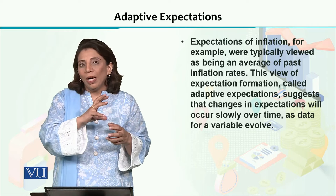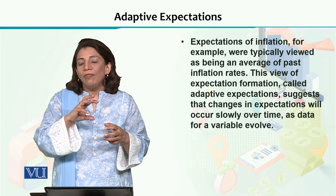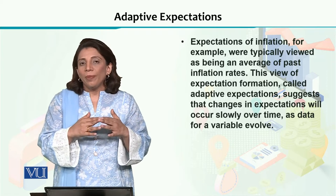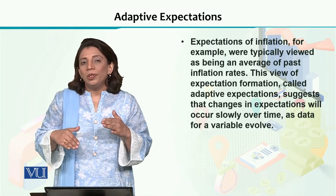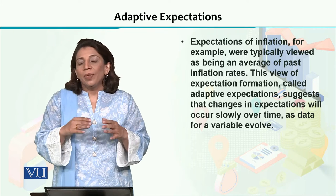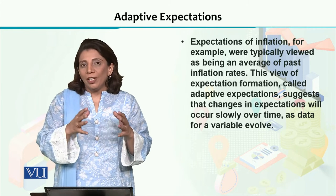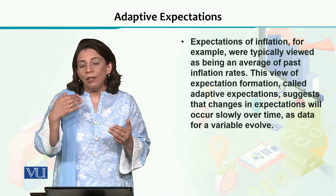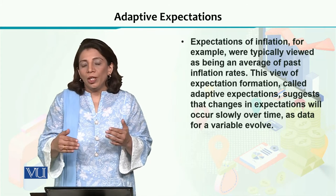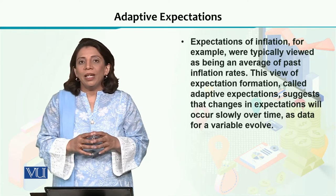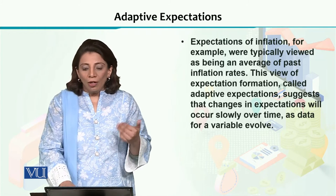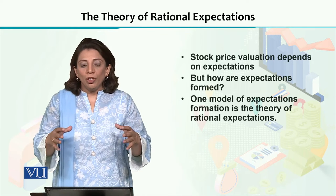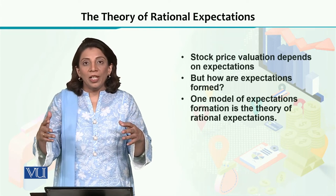If the prices have gone up in the past, they will be expected to rise in the future also. Conversely, if we have seen a downward movement in the previous data, the expectations for the future for that particular stock will be formed in a way that we will expect a downward movement again in future. This phenomenon is termed as adaptive expectations. On the contrary, we have another opinion, which is the basic foundation of the theory of rational expectations.